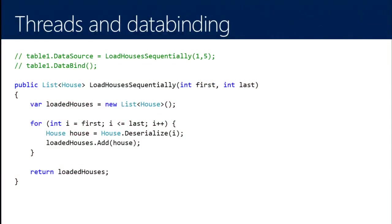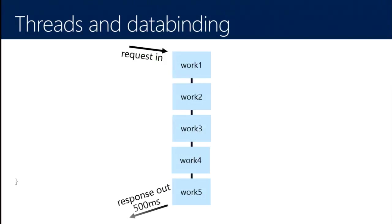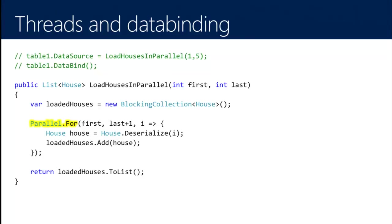Here's a simplified version of the code. Load-houses-sequentially goes through a list of houses and deserializes them one at a time — the profiled deserialize method takes about 100 milliseconds. With five houses, that's 500 milliseconds. It seems like there's easy stuff we could do to parallelize this.